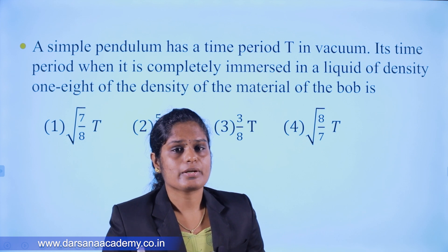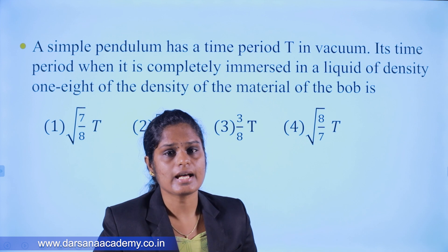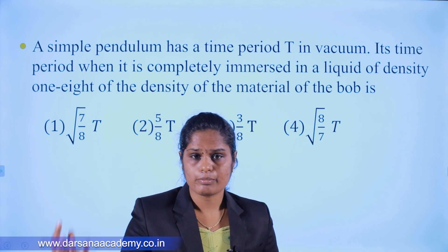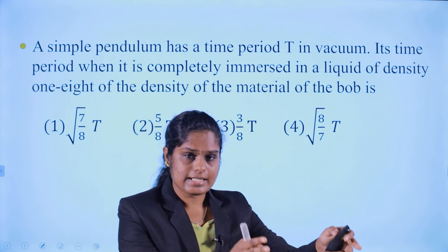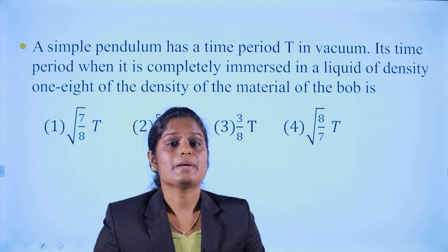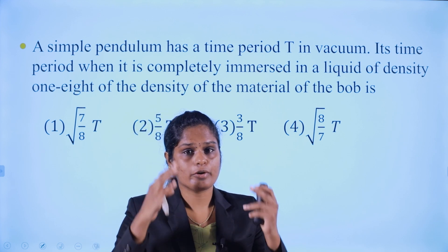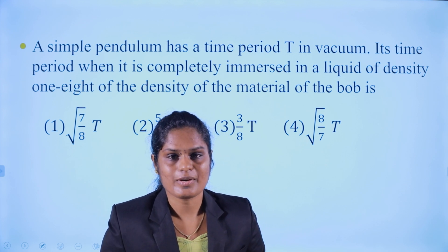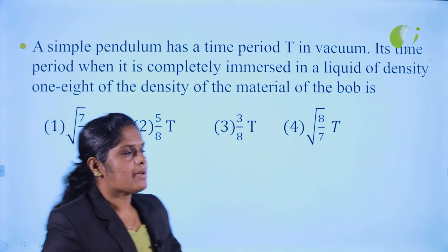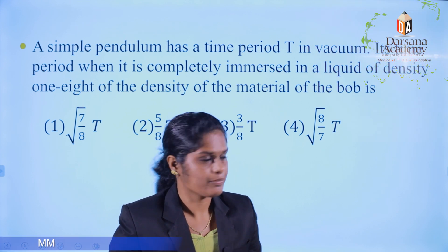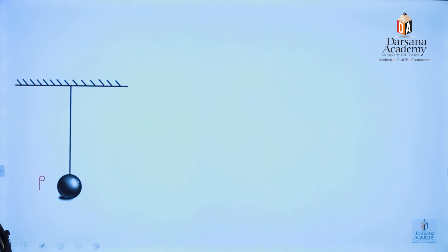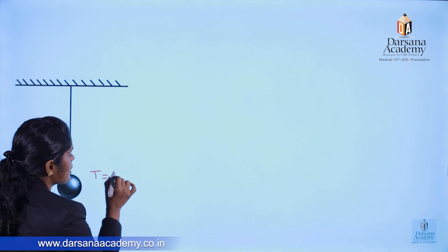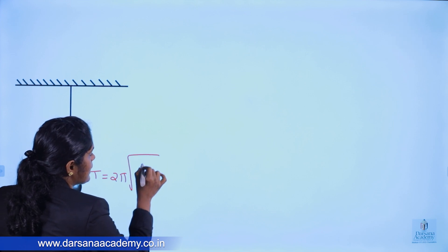Now let's look at the next problem involving a simple pendulum immersed in a liquid. The liquid has a certain density, and the material also has a density. In the first case, the time period is T = 2π√(L/g). When the pendulum bob is immersed in liquid with buoyancy force involved, the effective acceleration due to gravity changes.